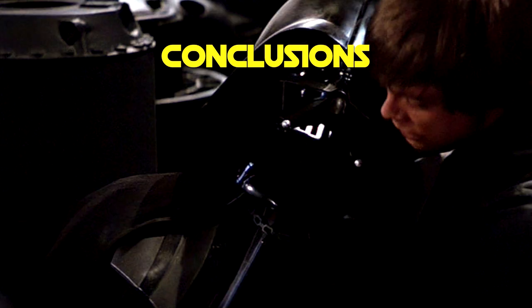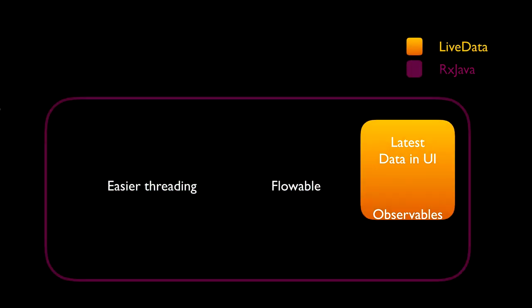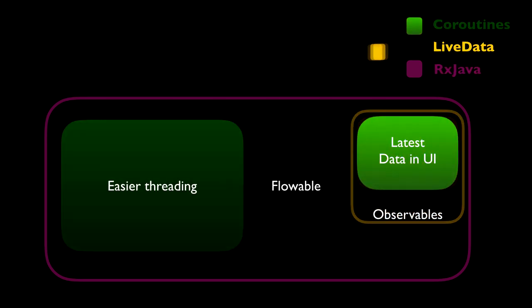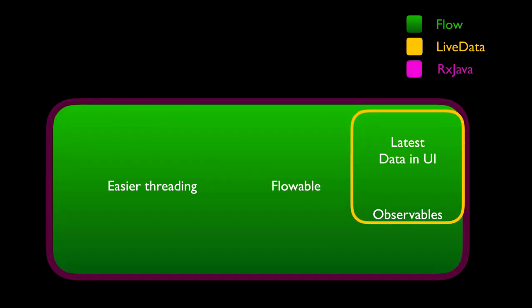We made some diagrams to show where the best place is for each of the technologies to be used, and we threw in LiveData as well. The areas under consideration are easier threading, flowables, observables, and latest data in the UI. RxJava can do it all. LiveData is a really excellent way to get the latest data in the UI but that's kind of it — it does have observables but they're very limited, though it integrates well with other Android architecture components. Coroutines definitely outshine both RxJava and LiveData in terms of threading, but the vanilla version doesn't handle flowables or observables at all — for that you need the experimental features called flows and channels. But once all of it reaches stable, coroutines will pretty much take over RxJava's domain.